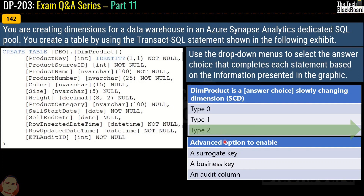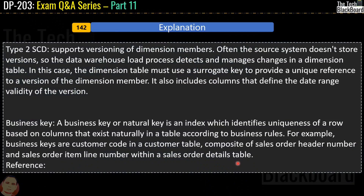The second part of question 142 asks what advanced option to enable, with options of a surrogate key, a business key, or an audit column. The correct answer is a business key. A business key, or natural key, is an index that identifies the uniqueness of a row based on columns that exist naturally in a table according to business rules. For example, a customer code in a customer table, or a composite of sales order header number and sales order item line number within a sales order details table.